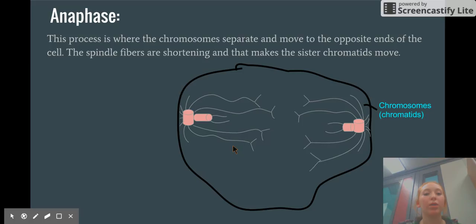This process is where the chromosomes separate and move to the opposite ends of the cell. The spindle fibers are shortening and make the sister chromatids move.